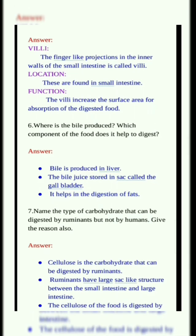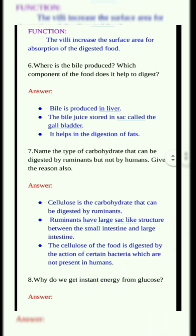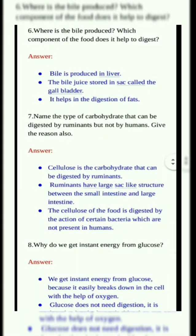Seventh question. Name the type of carbohydrate that can be digested by ruminants but not by humans. Give the reason also. Answer: Cellulose is the carbohydrate that can be digested by ruminants. Ruminants have a large sac-like structure between the small intestine and the large intestine. The cellulose of the food is digested by the action of certain bacteria which are not present in humans.